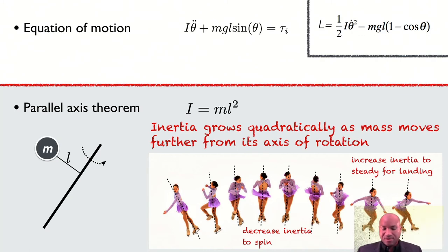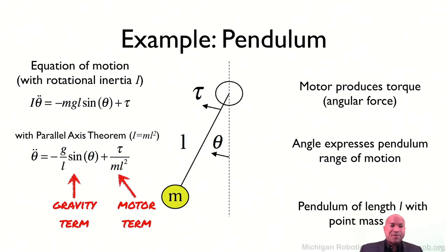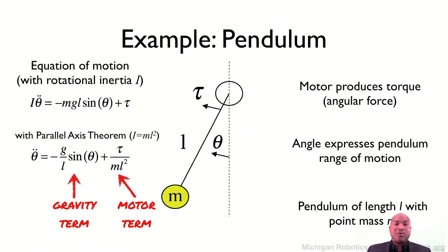Taking the parallel axis theorem, we now have two terms to think about: the acceleration term on one side of our system, and the gravity term on the other, where the only real parameter to consider is the angle of the pendulum — gravity and the length of the pendulum rod are constant. Then we also have the motor torque term, where the only variable to consider is the motor torque — mass and length of the pendulum rod are constant.